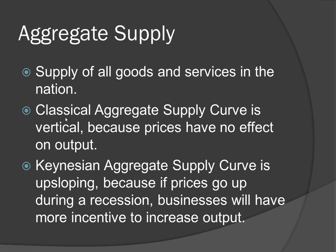Aggregate supply refers to the supply of all goods and services in a nation. There are a couple of supply curves that you need to know, and each one reflects a different school of thought. Classical economics states that the supply curve is vertical, because prices have no effect on output. This is because even though higher prices will incentivize businesses to produce more, higher prices also mean a higher cost of inputs. In classical economics, only resources and technology can affect output. However, the Keynesian supply curve is up-sloping, because in a recession, if prices go up, businesses will have more incentive to increase output, and input costs won't really change, because in a recession it's very easy to increase output.